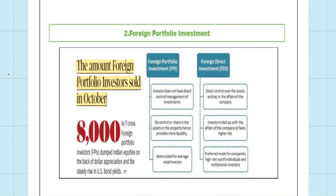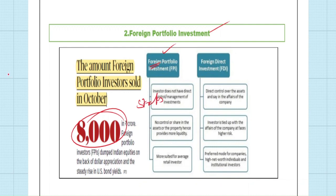The next article is regarding Foreign Portfolio Investment. India has received ₹8,000 crores worth of FPI. It's important to understand the difference between FPI and FDI from an exam perspective. Both are investments from foreigners. In FPI, investment is made on stocks and the share market, but in FDI, investment is made in companies through infrastructure projects or by owning assets.